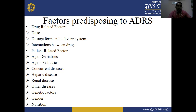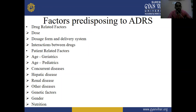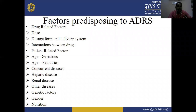The second factor is patient-related factors, such as age — especially focusing on elderly people and pediatrics — concurrent diseases including hepatic disease (liver disease) and renal disease (kidney disease), genetic factors (gene transfer from parents to children), and gender (male and female). These are the factors predisposing to adverse drug reactions.